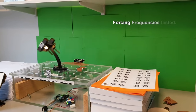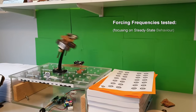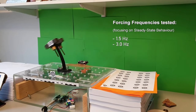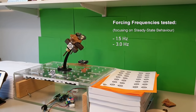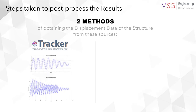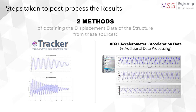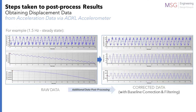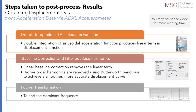Two tests were conducted on the structure: one at 1.5Hz and another at 3Hz. Two methods were used to find the displacement of the structure. The first method is video analysis through the software Tracker. The second method is to integrate the acceleration data from the test to find the velocity, then again to find the displacement. The steps in the double integration of the data are shown here.